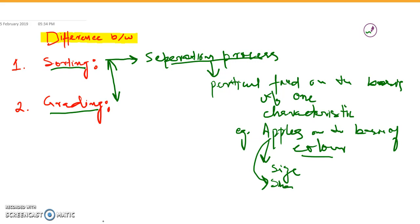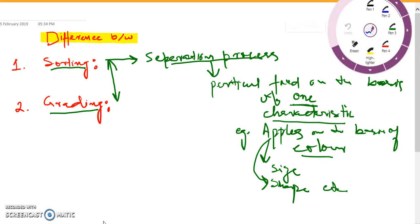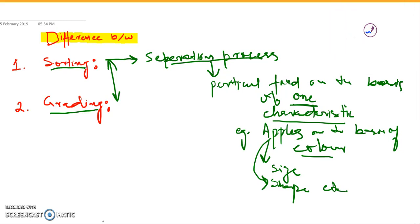We can also separate apples on the basis of shape and stress. So sorting is actually a separation technique in which we use only one characteristic - that characteristic can be color, size, or shape. It is basically a separation process. On the other hand, if we talk about grading, it is an overall quality assessment.